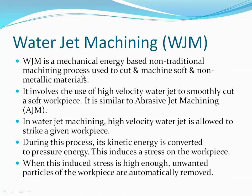Water jet machining is a mechanical energy-based non-traditional machining process. The energy domain is mechanical because it uses shear stress for material removal. It machines soft and non-metallic materials — mostly soft metals. It cannot machine brittle materials; for brittle materials we use abrasive jet machining. For ductile and malleable soft metals or non-metals, we use water jet machining, which involves a high-velocity water jet to smoothly cut the soft workpiece.